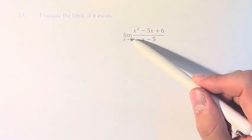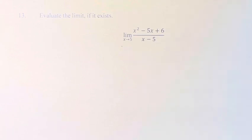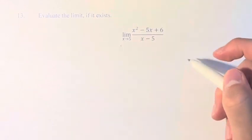So what we want to do is to be able to plug in 5 into our fraction. However, we can't do that directly, because if we did that, then we would have 5 minus 5 in the denominator, which is 0, and you can't divide by 0.